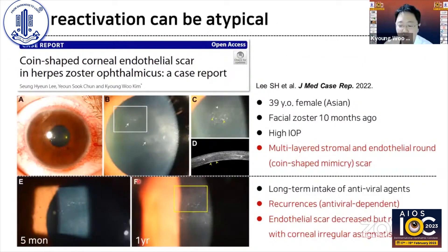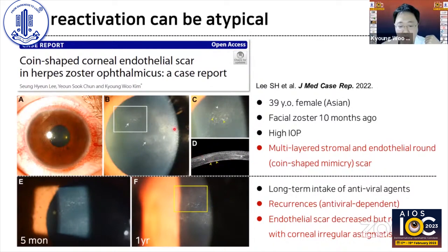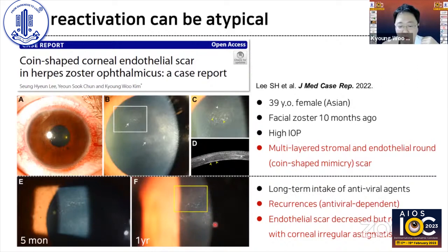I have also experienced atypical zoster keratitis. This 39-year-old female had keratouveitis, with corneal lesions involving multiple stromal layers on anterior segment OCT and also in the endothelium. Although this is not the same as coin-shaped KP seen in CMV endothelial lesions, I was initially confused with CMV endothelitis because her IOP increased very frequently. After a long course of antiviral agents, the endothelial scar decreased but remained, with persistent corneal irregular astigmatism.